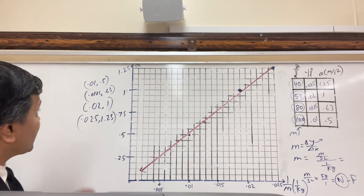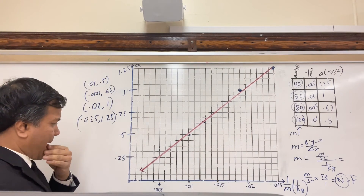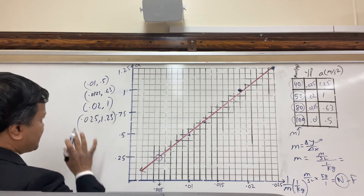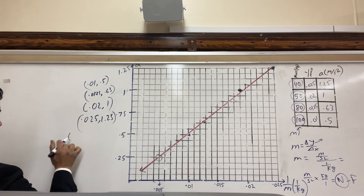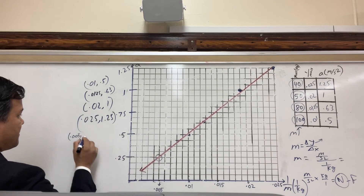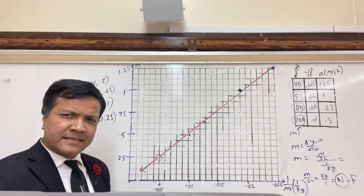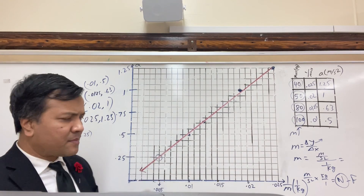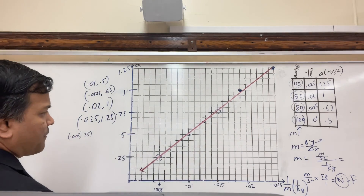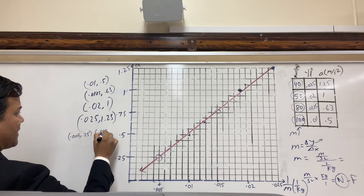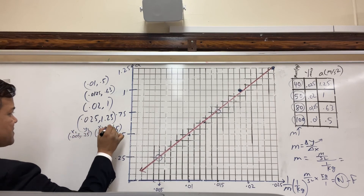We are going to collect two points that don't come from this table. This point does not come from this table. So we are going to write (0.005, 0.25) — this point did not come from the table. We have to make sure that our points come from the best-fit line, not from the table. Let's collect this one: (0.015, 0.75). So this is our x1, y1, x2, y2.